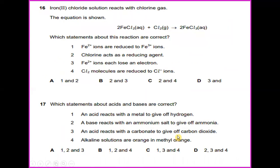Iron 2 chloride solution reacts with chlorine gas. The equation is 2FeCl2 plus Cl2 to form 2FeCl3. Which statement about this reaction is correct? Fe 2+ ions each lose an electron. The answer will be D.